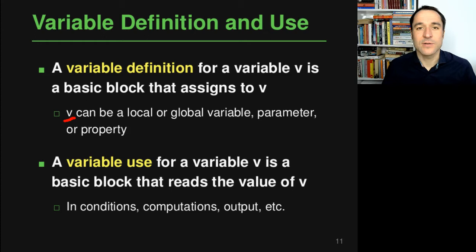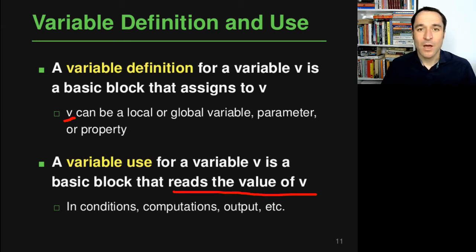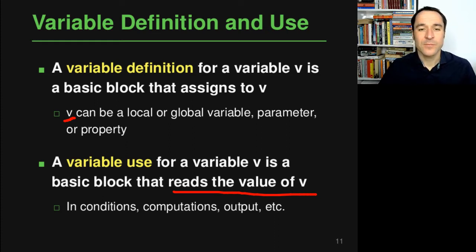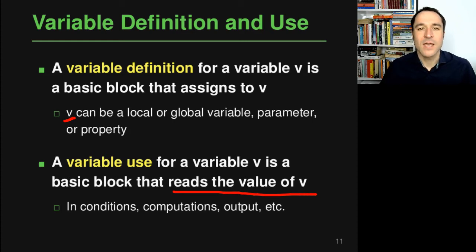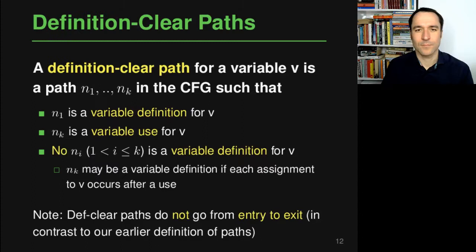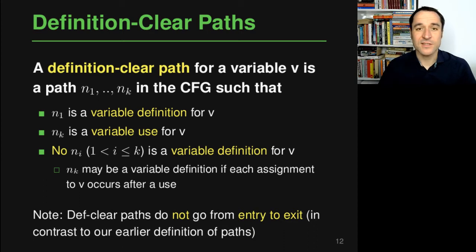The counterpart of variable definitions is variable uses. For a variable v, this is a basic block that reads the value of v — for example in a condition, in a computation involving a complex expression, or when writing something to the console. Any kind of use that reads the variable is called a variable use. With nodes labeled as definitions and uses, we can define definition-clear paths.